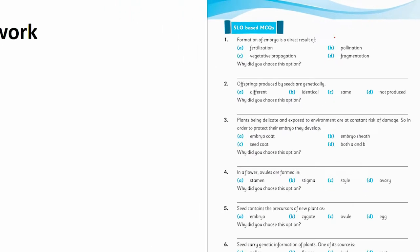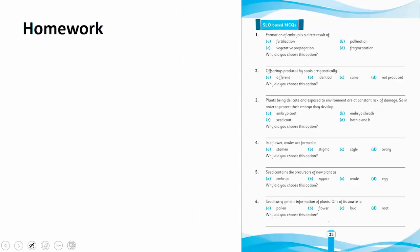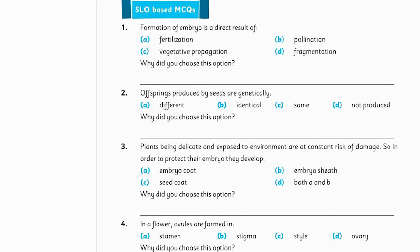Then come the SLO-based MCQs at page 33. You will solve question number 1: The formation of embryo is a direct result of — fertilization, pollination, vegetative propagation, or fragmentation? Find which of these 4 processes leads to embryo formation, and then explain the reason why you chose that option.